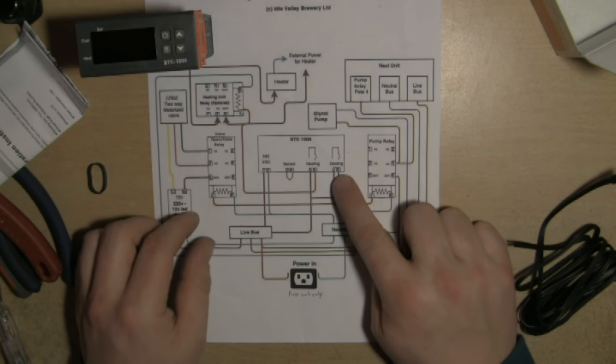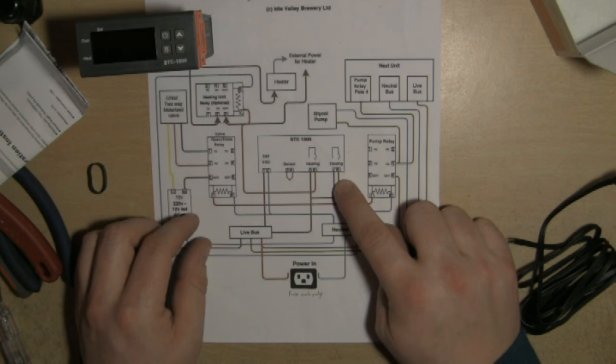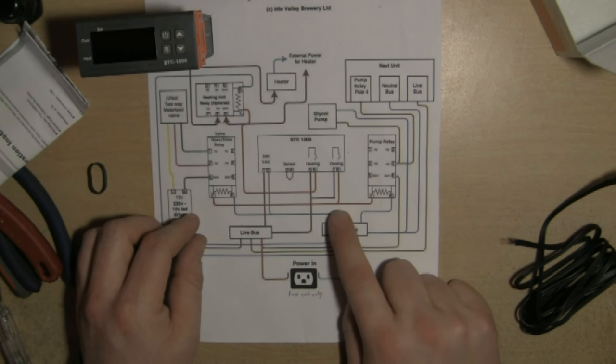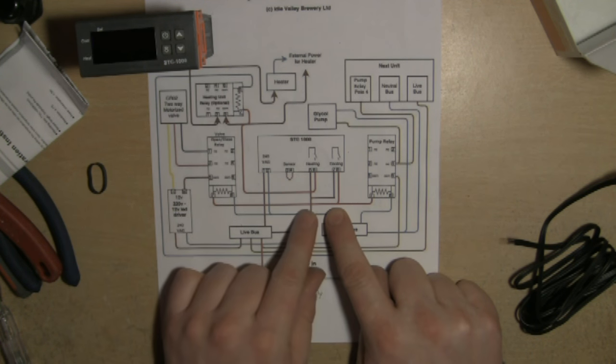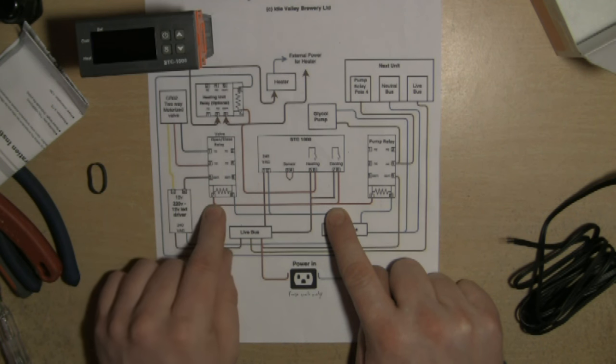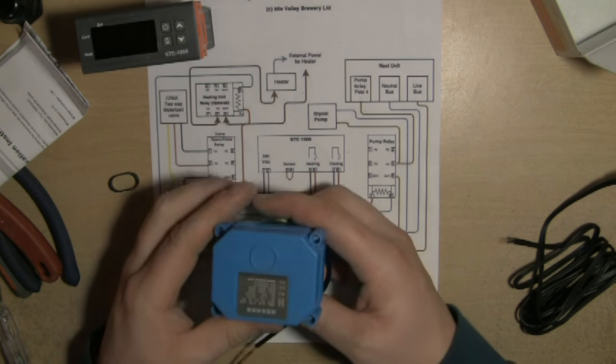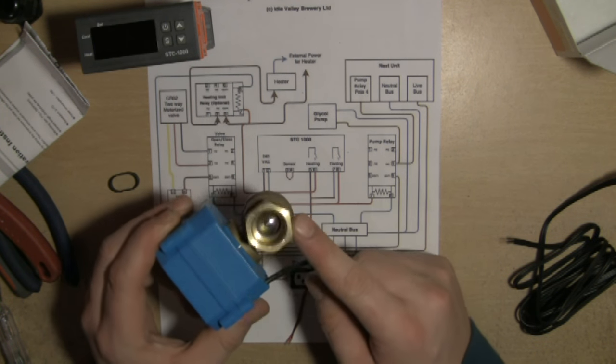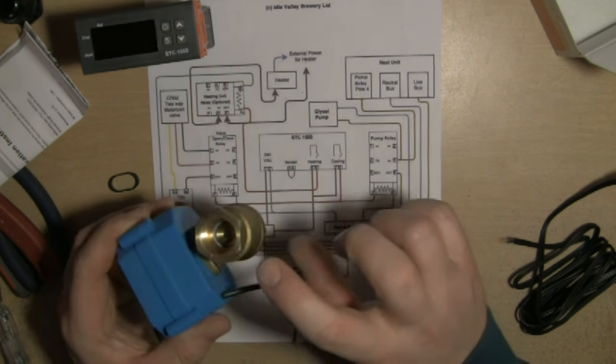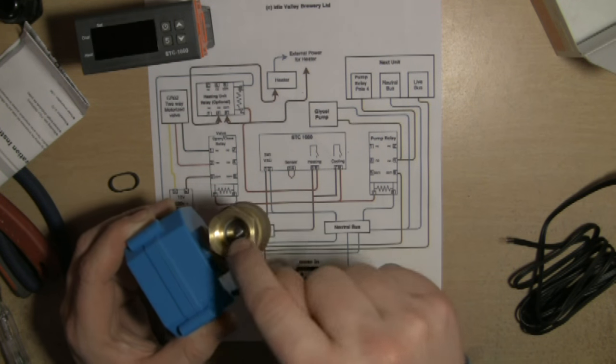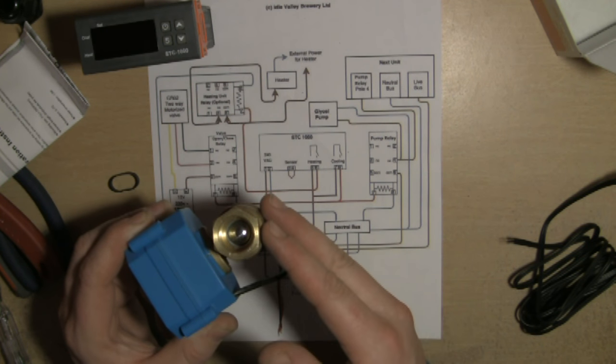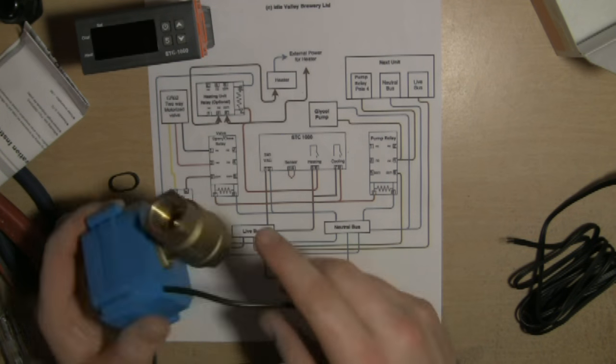That will also send power to the valve open and close relay, and then that will open and close one of these motorized valves that we use. This is set to control the flow of your cooling agent, in our case glycol, going into a jacket.